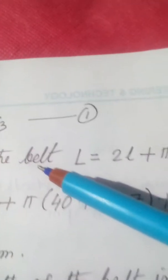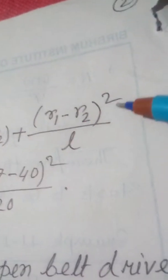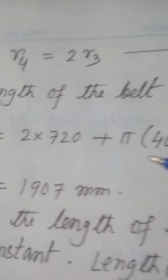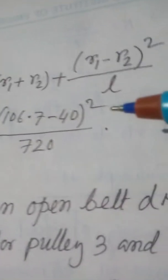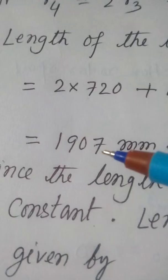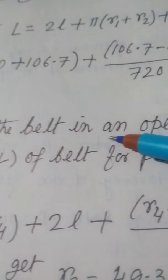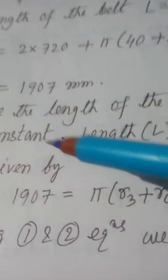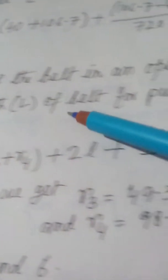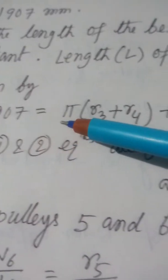Now for the length of the belt — since R1 and R2 are known, we can calculate it. Using the open belt length formula (note the minus sign for open belt), after substituting the values we get a belt length of 1907mm. Since the belt length is constant for a stepped pulley open belt drive, this same value applies to pulleys 3 and 4.